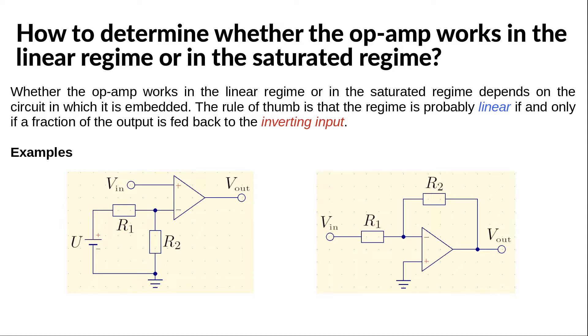In the circuit on the left, the two resistors form a voltage divider, so the inverting input is maintained at a constant voltage, which is a fraction of the voltage U. This voltage has no relationship with the arbitrary voltage applied at the non-inverting input.